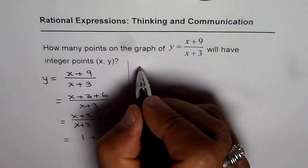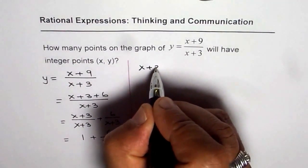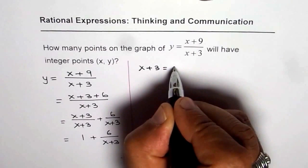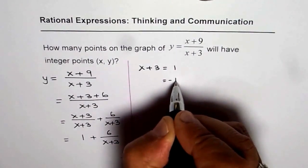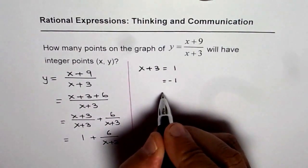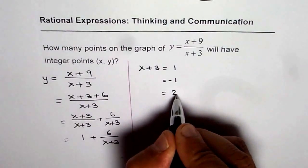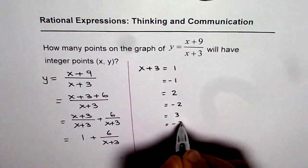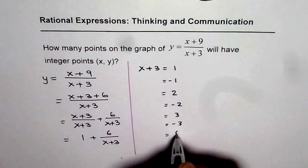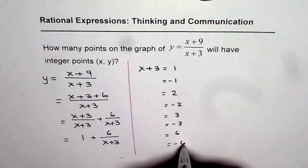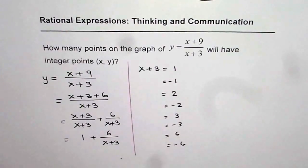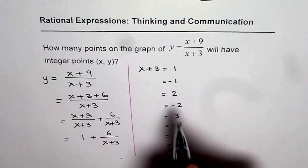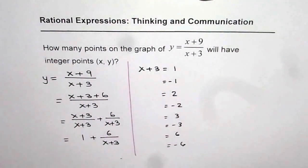So, what are the possible values? x plus 3 could be equal to 1, or minus 1, that means plus minus 1. It could be plus 2 or minus 2. It could be plus 3 or minus 3. It could be plus 6 or minus 6. So that will give you possible values of x.